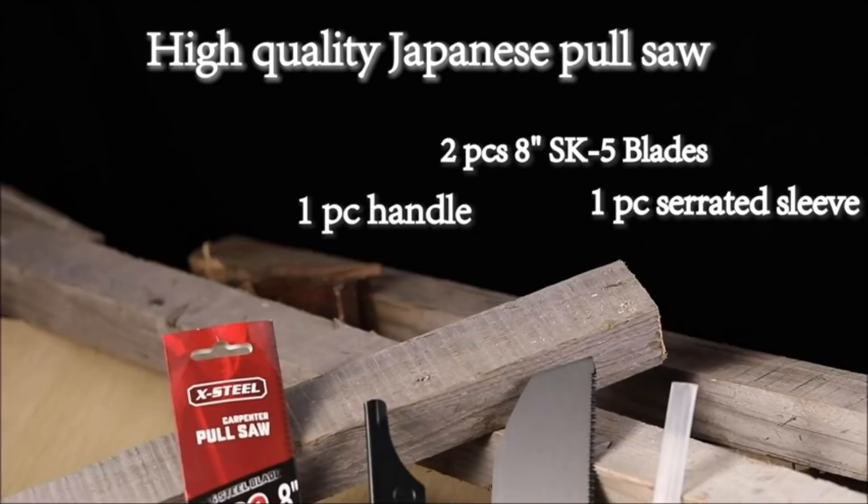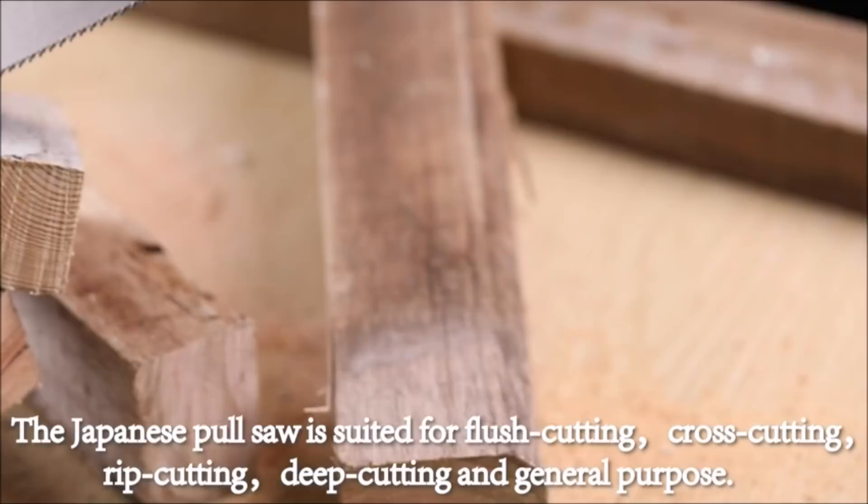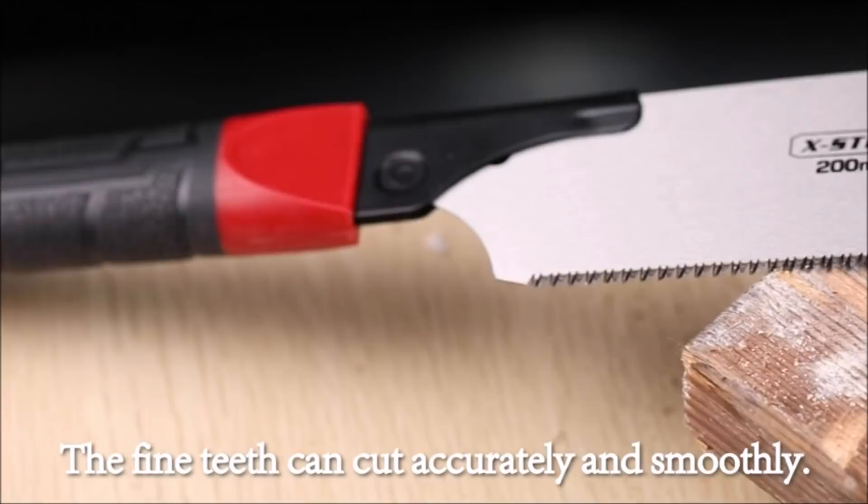This Japanese pull saw is professional at efficient flush cutting, cross cutting, rip cutting, deep cutting and general purpose, ideal for woodworking. The blade of Japanese pull saw for woodworking is thin and flexible, enough to bend almost 90 degrees to cut flat objects.